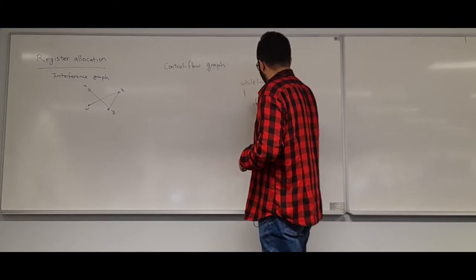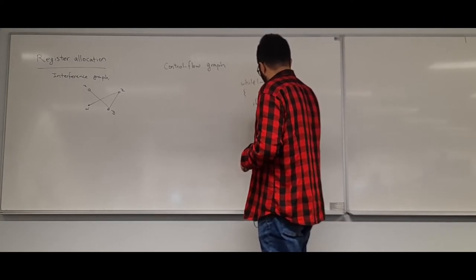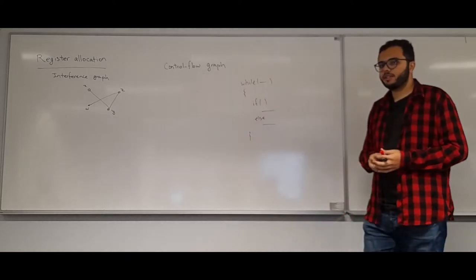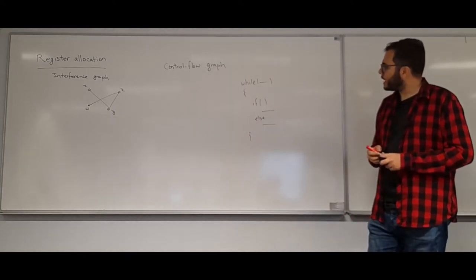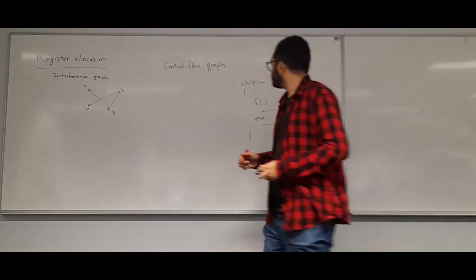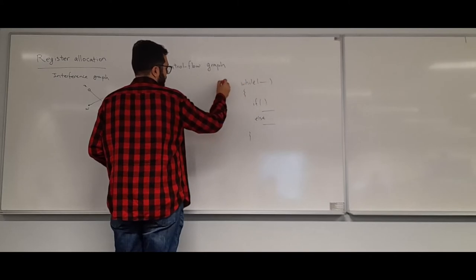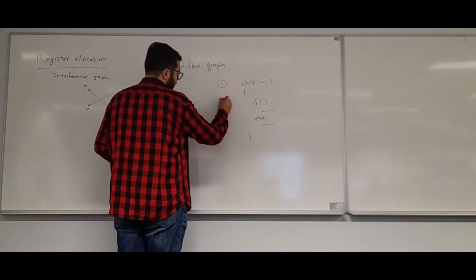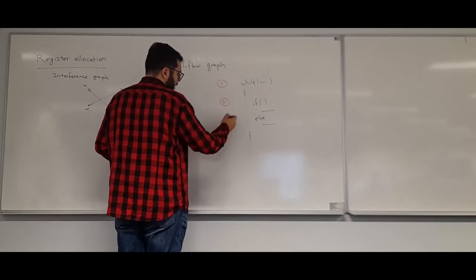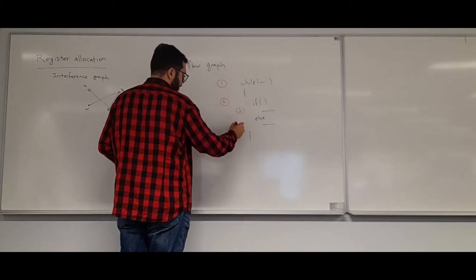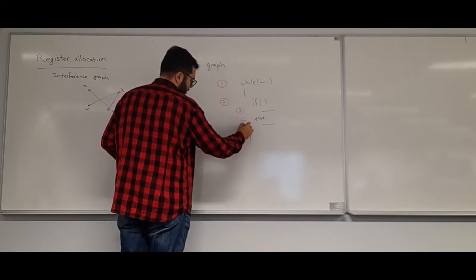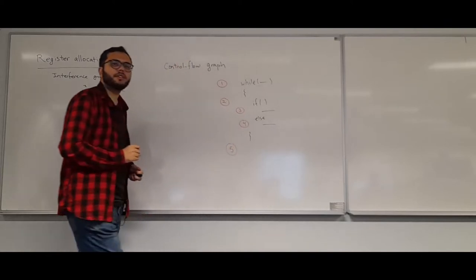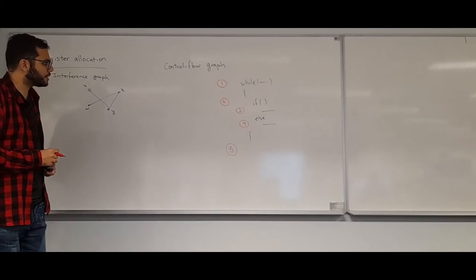For example, if my program has a while loop with an if-else inside, I assign one vertex to every statement in the control flow graph: one vertex for while, one for if, one for each branch body, and one vertex for the end of the program. I don't put a vertex for else itself.